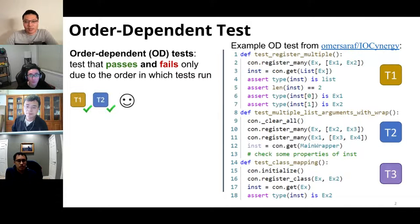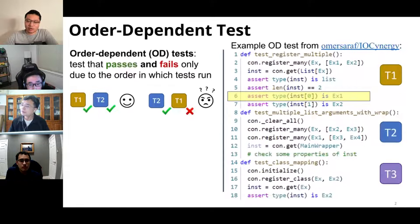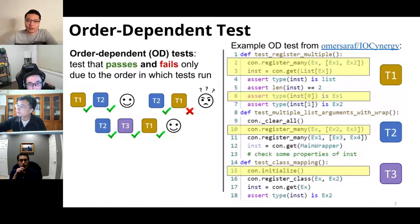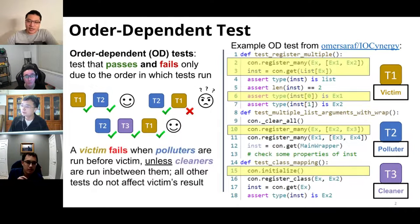Here is an example from an open source project with tests T1, T2, and T3. When running T1 then T2, both tests pass. When running T2 then T1, T1 fails because of the assertion on line 6. When running T2, T3, then T1, all three tests pass. All three tests depend on some shared container variable 'con,' and they all either manipulate or read from it, creating a dependency among all three tests.